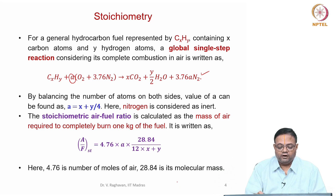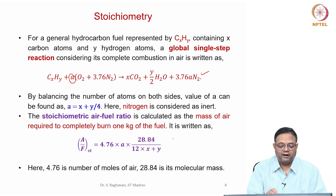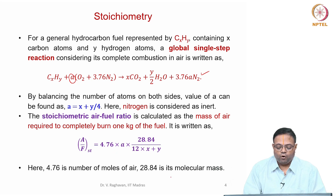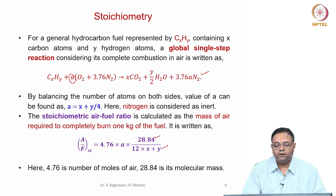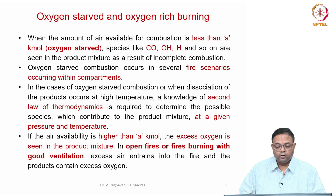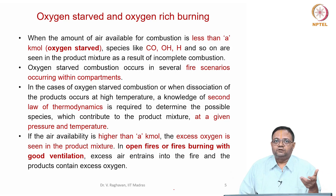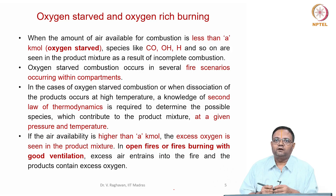From this equation we can evaluate the stoichiometric air-fuel ratio — the mass of air required to completely burn 1 kilogram of fuel — written as 4.76A × 28.84 (molecular weight of air) divided by the molecular weight of the fuel, calculated as 12X + Y. If the fuel contains nitrogen, oxygen, etc., the amount of oxygen required from air is correspondingly less.